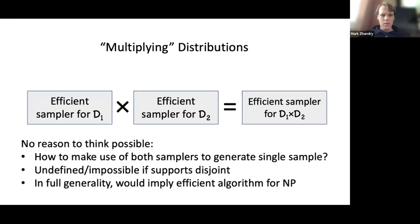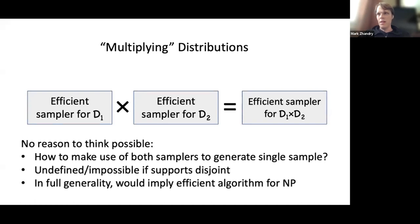To make matters worse, the product distribution is actually just not defined in some cases. For example, if d1 and d2 have disjoint supports, the product distribution doesn't make sense — the pointwise products are zero everywhere; there's no distribution. So clearly something is going to go wrong in full generality. And even if we only care about distributions with overlapping support, we still wouldn't expect this to be doable efficiently, because in full generality it would imply an efficient algorithm for NP.